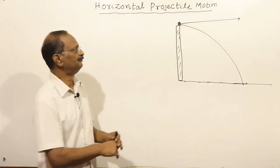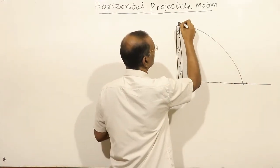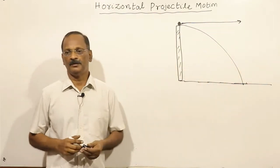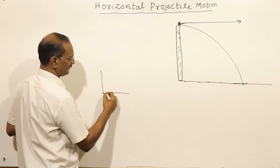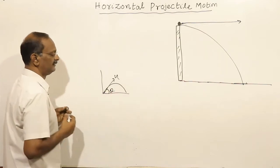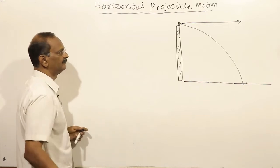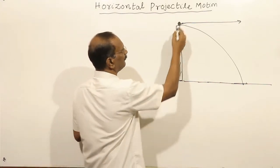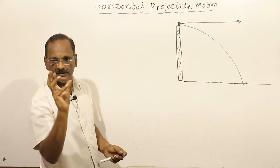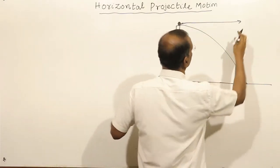Horizontal projectile motion. We will study horizontal projectile motion compared with oblique or angular projectile motion. The projectile is thrown horizontally with an initial velocity u.